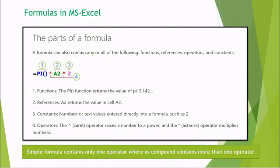What all can a MS Excel formula contain? It can contain functions, references, operators and constants. Functions are predefined like pi will give me the pi value 3.14. Multiplication and caret both are operators like addition, division. Caret means raised to the power. Here it means A2, whatever value is stored in reference A2, raised to the power 2. A2 is the reference and 2 is a constant.